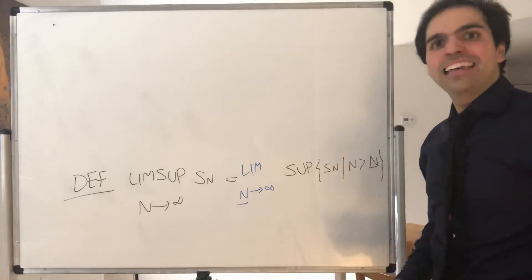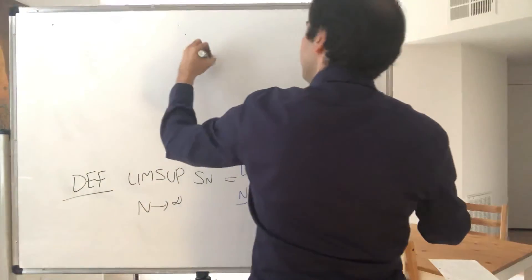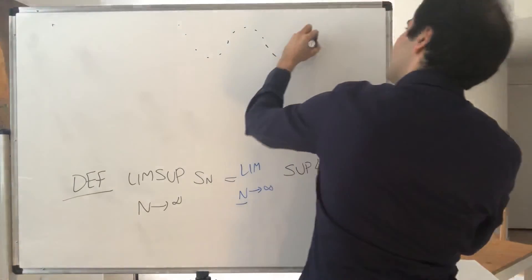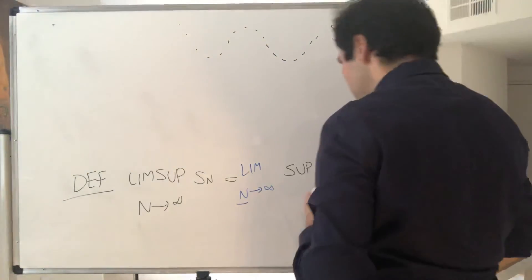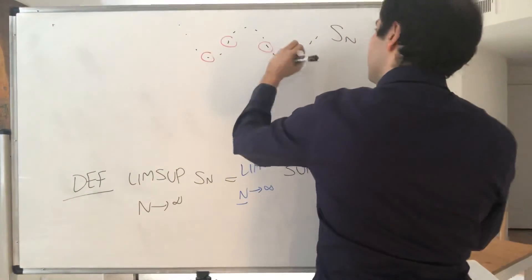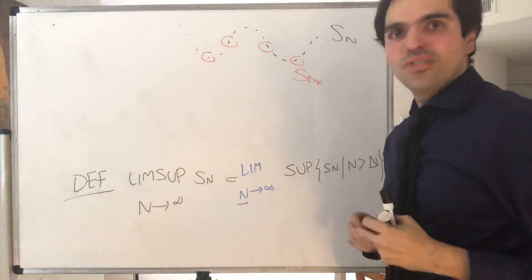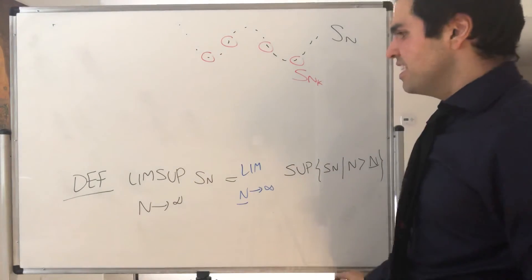Luckily, we can using the notion of a subsequence. So a subsequence, if you think of Sn as a train, then a subsequence is just an express train. Kind of a subset of a sequence that's also a sequence.